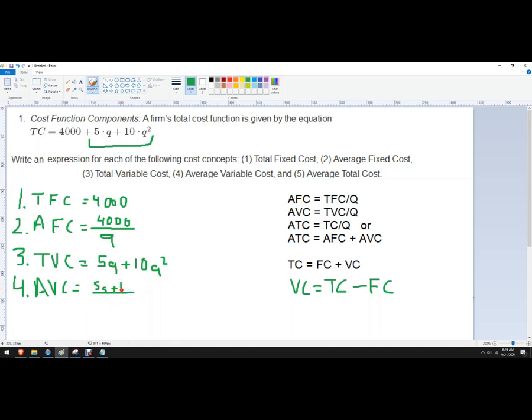5Q plus 10Q squared, that's a Q divided by Q equals five, because those guys will cancel out. Let me use a different color now. Those guys will cancel out.